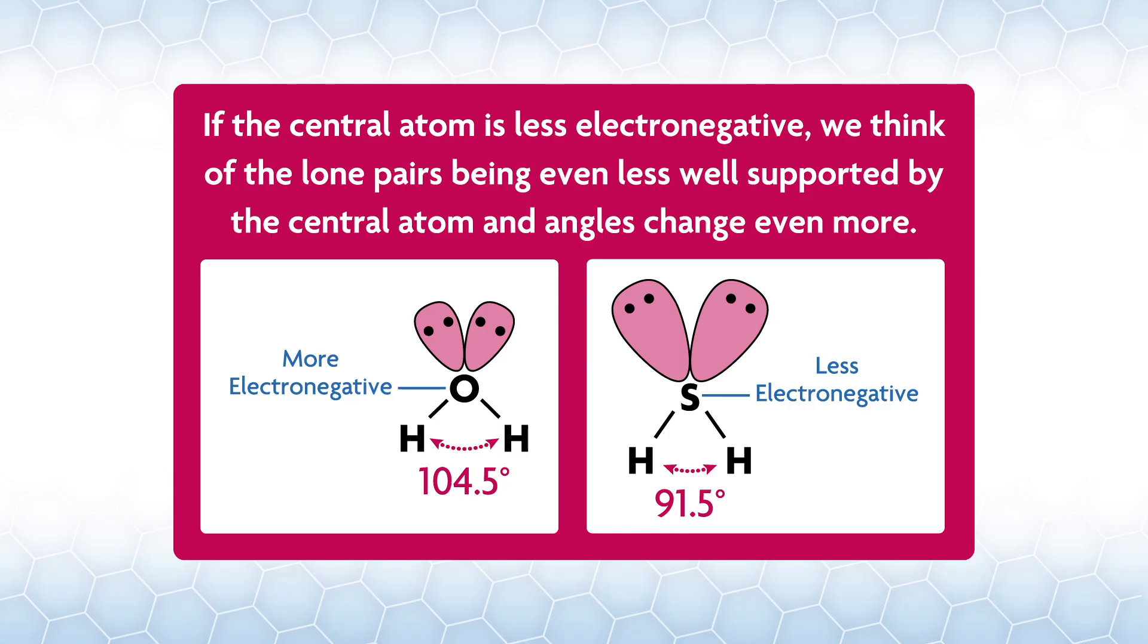If it was size, the CF3 group would be one of the largest angles. If you calculate the radius of CF3 it is between bromine and iodine. However, the tris-CF3 compound has one of the smallest angles near fluorine, consistent with the electronegativity determining the size. If the central atom is less electronegative, we think of the lone pairs as being even less well supported by the central atom and the angles change even more.